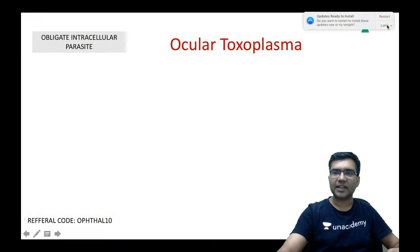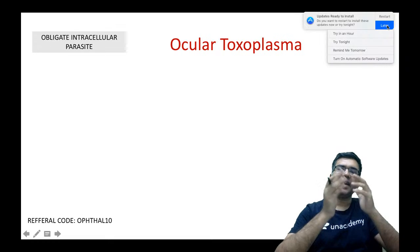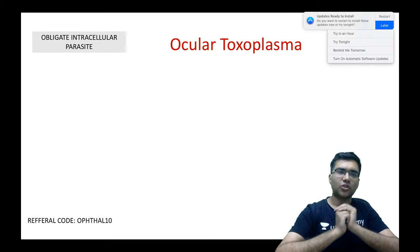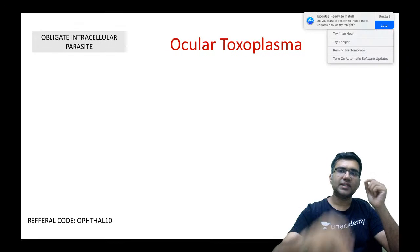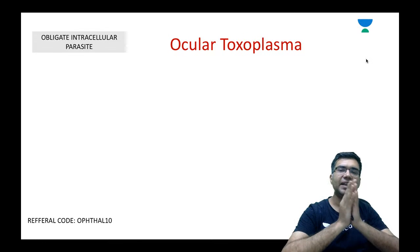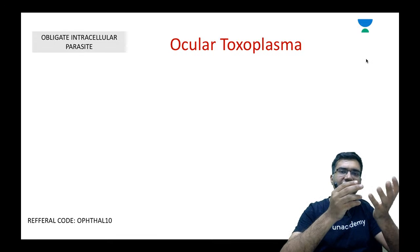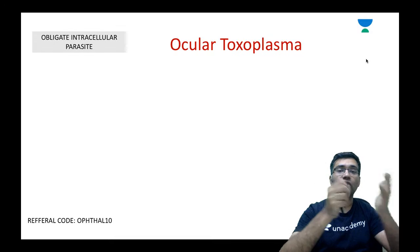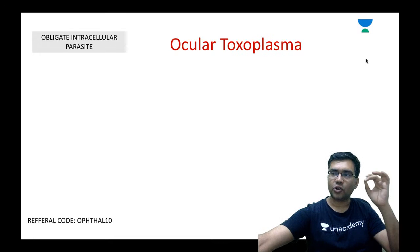So with this I start my session. First we will talk about ocular toxoplasma and then we will talk about cytomegalovirus retinitis. Toxoplasma — you must have read this topic in detail in microbiology. Briefly, toxoplasma is an obligate intracellular parasite. It goes inside the retinal cells, proliferates there, damages the host cell, and then infects the surrounding cells.